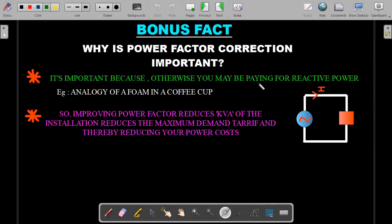To electrical engineers, it's a nice analogy that they'll be taught. It's similar to the analogy of a foam in a coffee cup. You buy coffee and there's a lot of foam, it looks good, but actually you're not going to drink that much. So you want less foam in your coffee cup to have value for your money. So improving the power factor reduces the kVA rating of your devices which are being installed and it reduces the demand tariff, and thereby reducing your power cost.